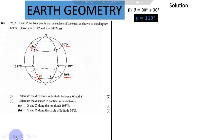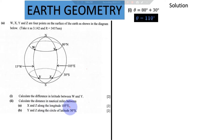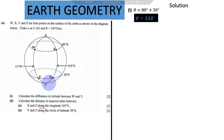Then we come to the second question: calculate the distance in nautical miles between X and Z along longitude 105 degrees East. If you look at X and Z, they are seated on the same longitude. Some questions specify the longitude, and some just say find the distance of X and Z, so you have to identify. In this case X and Z are on the same longitude but different latitudes.